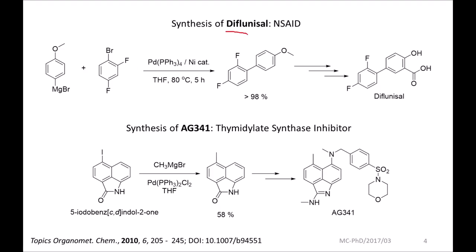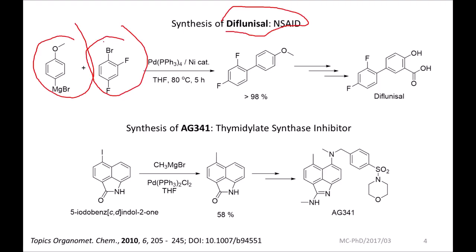This is the synthesis of difluoanisole, a medicinal chemistry compound. We have a Grignard reagent reacting with 1,3-difluoro-2-bromobenzene. We can use either a nickel or palladium catalyst. The bromine gets substituted because it is more reactive — the reactivity order is iodine > bromine > chlorine > fluorine. So bromine is replaced, MgBr₂ is the byproduct, and we get the carbon-carbon bond formed at the bromine position.